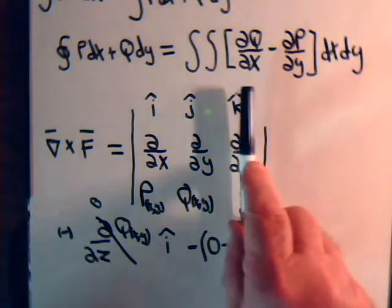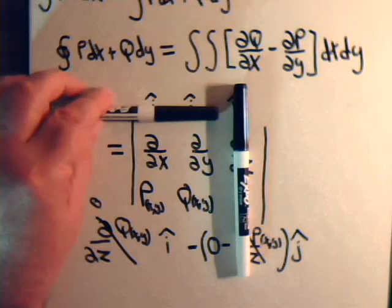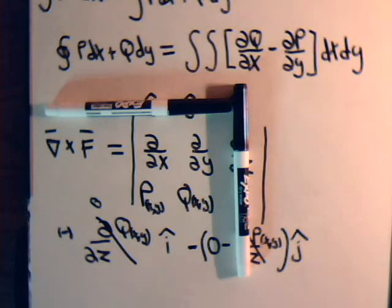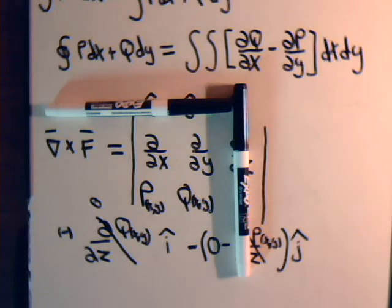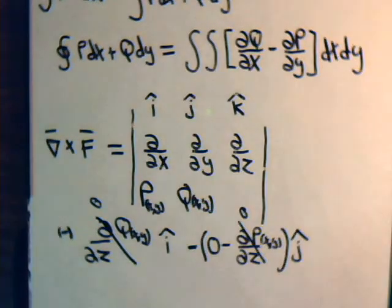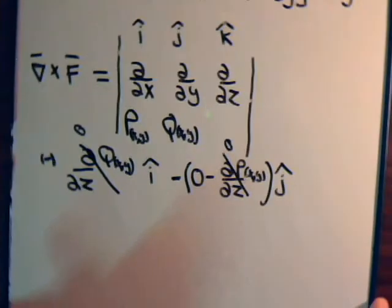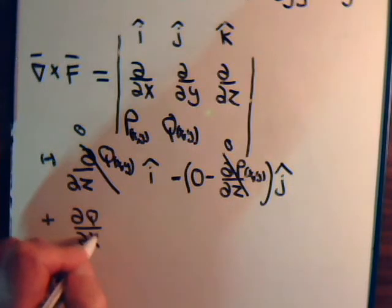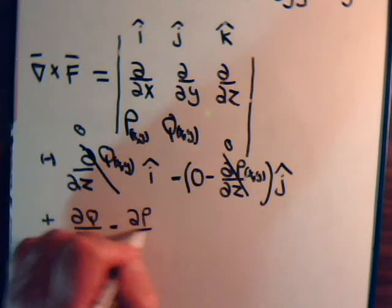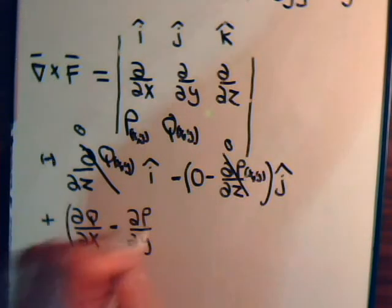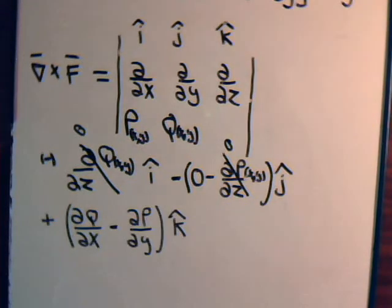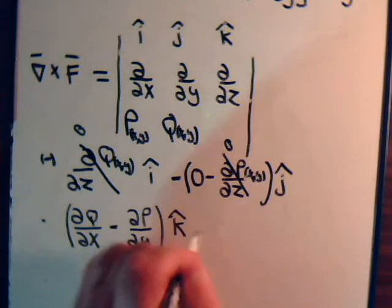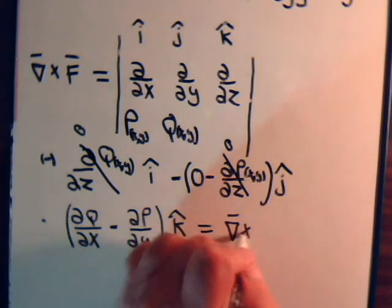For the k component of the curl, we cover up the k column and the first row. We get the sub-determinant giving (∂q/∂x minus ∂p/∂y). Since p and q are both functions of x and y, we get a non-zero expression. So the curl of f equals (∂q/∂x − ∂p/∂y) times the unit vector k.